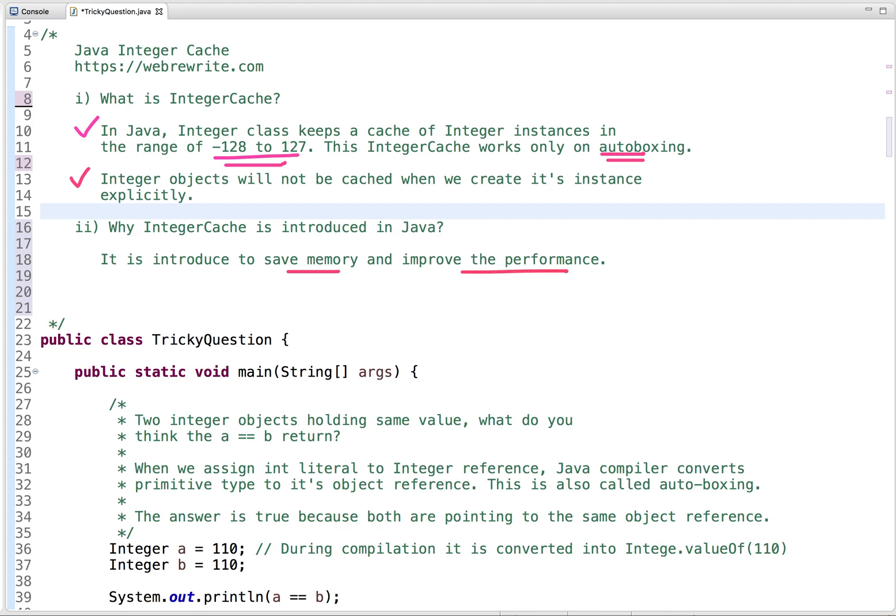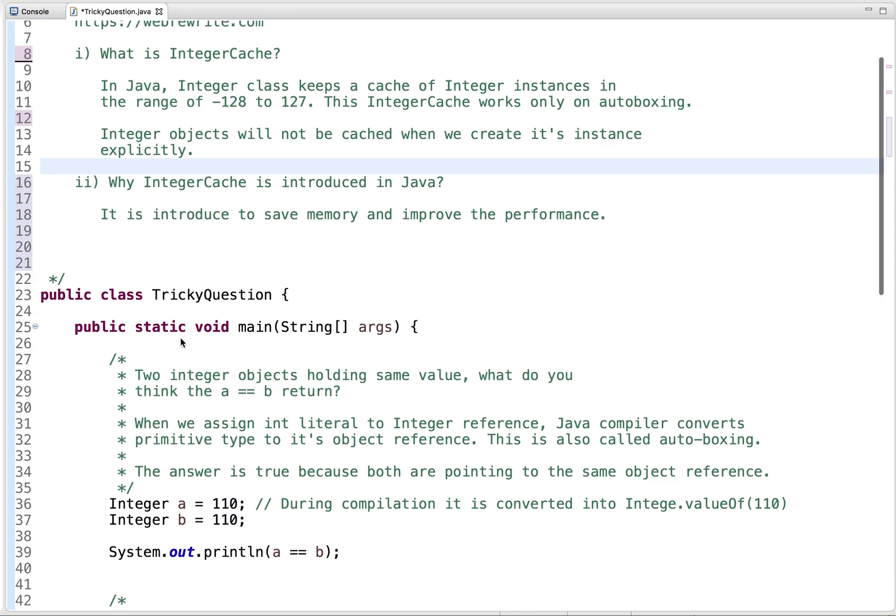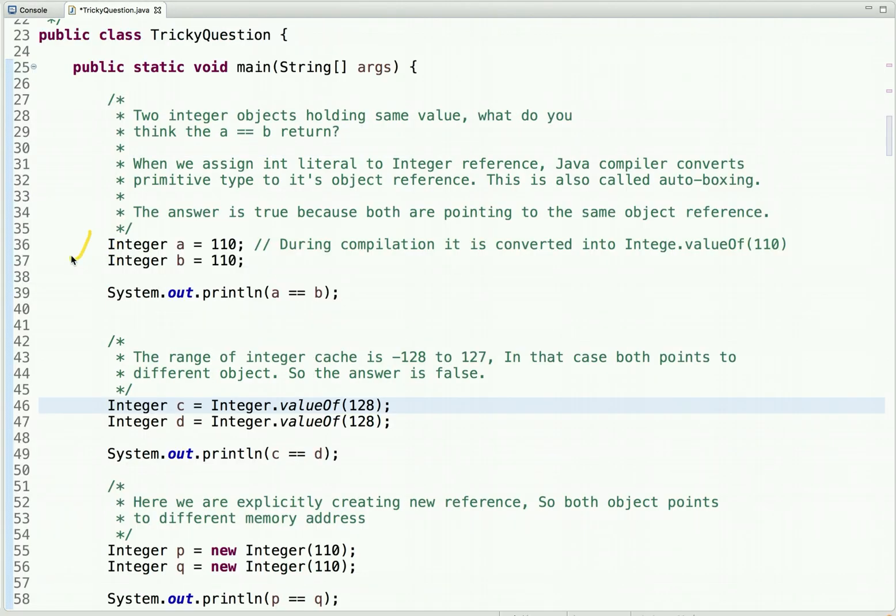Now let's understand the output of following statements. So here we are creating two different objects of integer type and then we are checking whether they points to the same memory address and we know its answer it is true. But why? So I have already explained the concept of integer cache and its range is from minus 128 to 127.